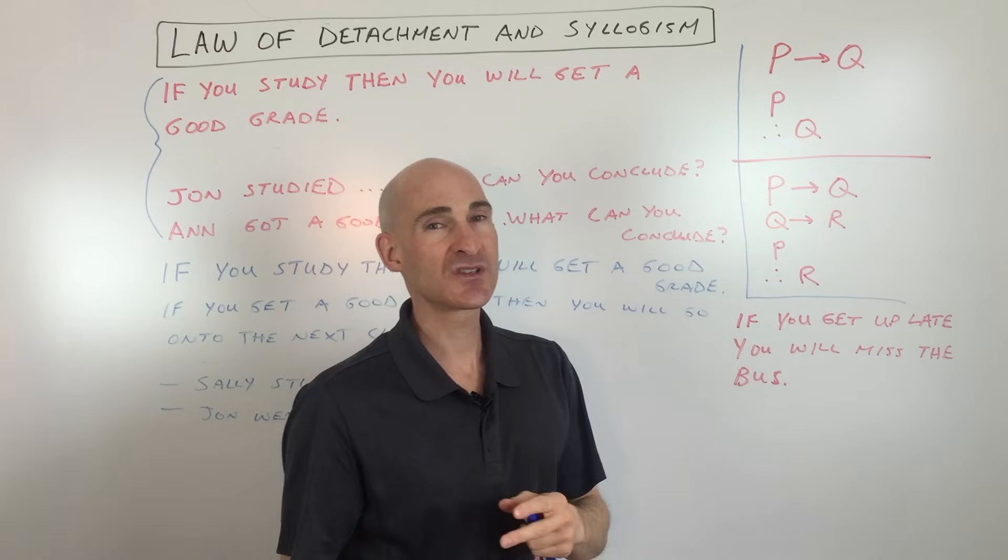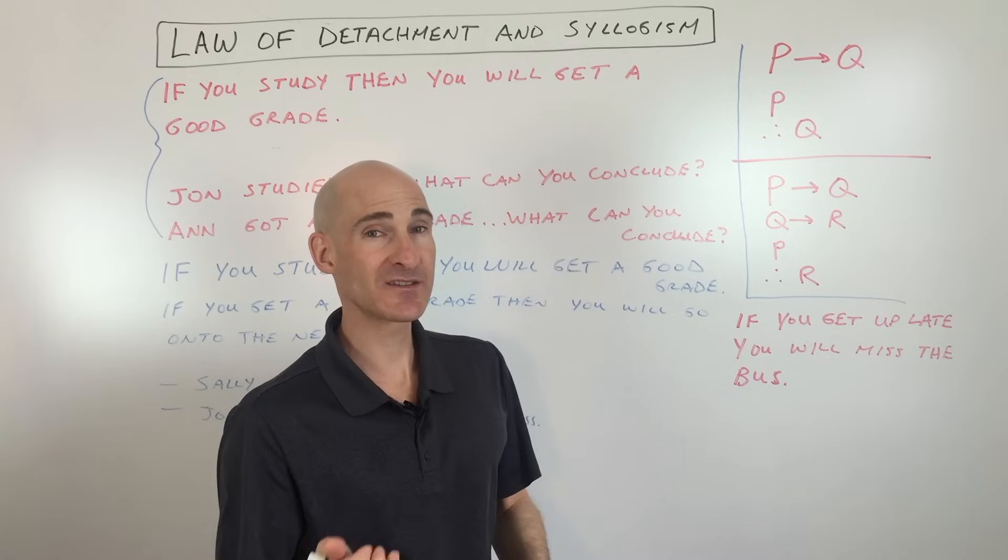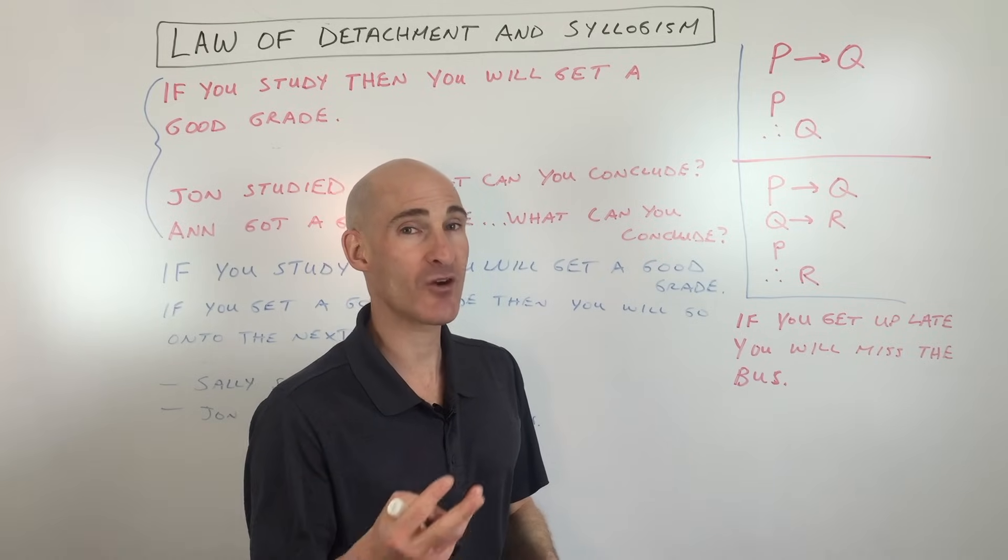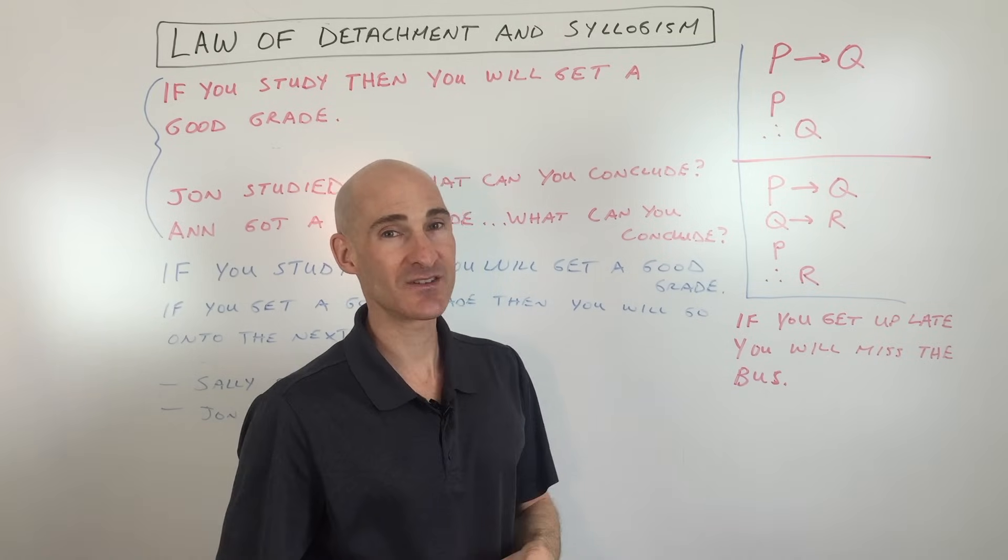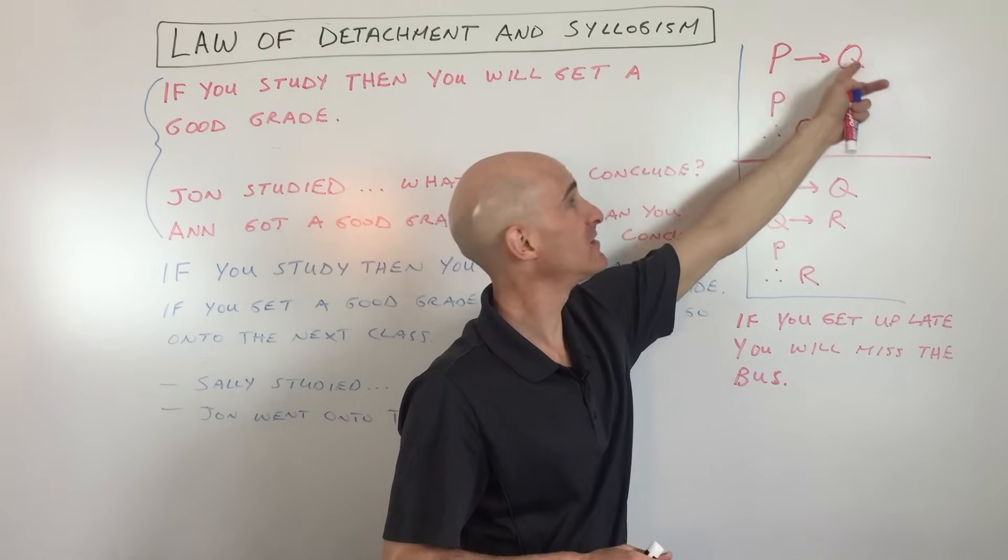Now sometimes students get a little bit confused like, is it law of detachment, is it law of syllogism? Well with law of syllogism, you'll notice that there's three or more quantities involved, whereas law of detachment, there's just two quantities, the hypothesis and the conclusion.